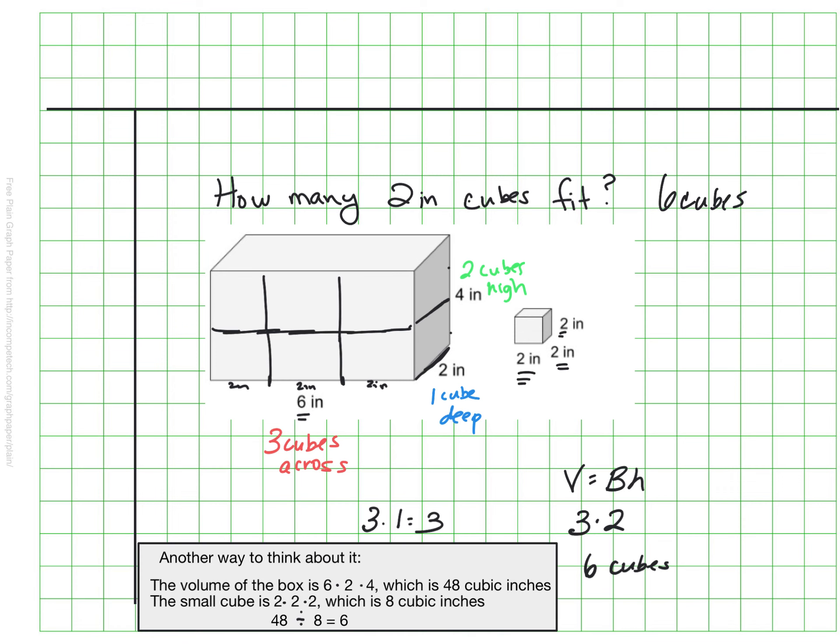There is another way to think about it that's not as visual. So this might appeal to some people versus the visual that appeals to others, and that's that the volume of the original box was 6 by 2 by 4. And if we do the volume, we know that it should hold 48 cubic inches, but the small cube is 2 by 2 by 2, so that small cube itself is 8 cubic inches, and if we take our 48 and we split it by 8, we will get the same 6 that I got with my visual. So that's just another approach.